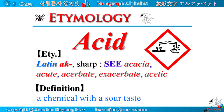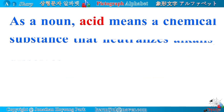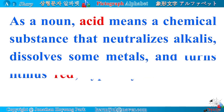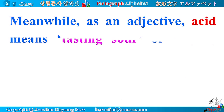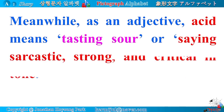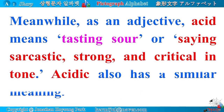Definition: A chemical with a sour taste. As a noun, acid means a chemical substance that neutralizes alkalis, dissolves some metals, and turns litmus red — typically a corrosive or sour-tasting liquid. As an adjective, acid means tasting sour, or saying something sarcastic, strong, and critical in tone.